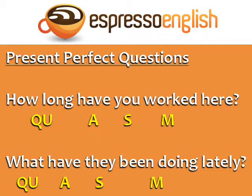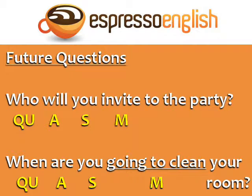This formula also works with present perfect questions. In this case the auxiliary verb is 'have' or 'has': 'How long have you worked here?' and 'What have they been doing lately?'